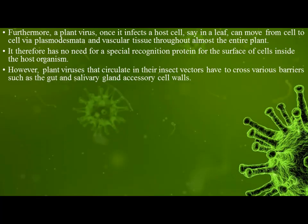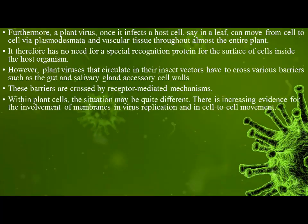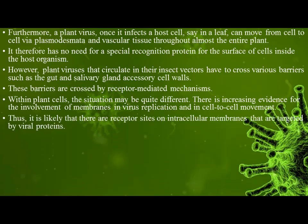However, plant viruses that circulate in their insect vector have to cross various barriers such as the gut and salivary gland accessory cell walls. These barriers are governed by receptor-mediated mechanisms. Within plant cells, the situation may be quite different — there is increasing evidence for the involvement of membranes in virus replication and in cell-to-cell movement, suggesting there are receptor sites on intracellular membranes that are targeted by viral proteins.